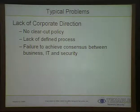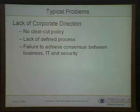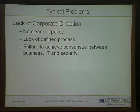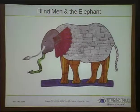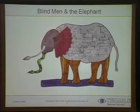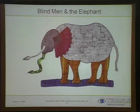Typical problems in vulnerability management programs — especially those set up just to meet compliance requirements — include no corporate direction, no clear-cut policy, no defined process, and no consensus between the business, IT, and security people. They usually just tell the security team to go buy some tools and make the system secure. This leads to the blind men and the elephant metaphor: everybody has a different picture. Business people look at data importance, IT looks at OS issues, and audit teams may flag vulnerabilities on systems that don't matter. You need consensus so everybody has the same picture of the goals.